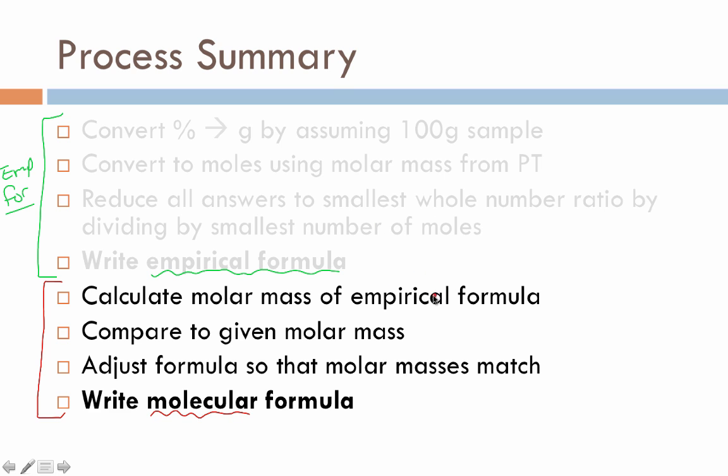Calculating the molar mass of your empirical formula, compare it to the given molar mass from your mass spectrometer, and then make adjustments to your formula either via the equation or guessing and checking until the molar masses match. And that's basically the process.